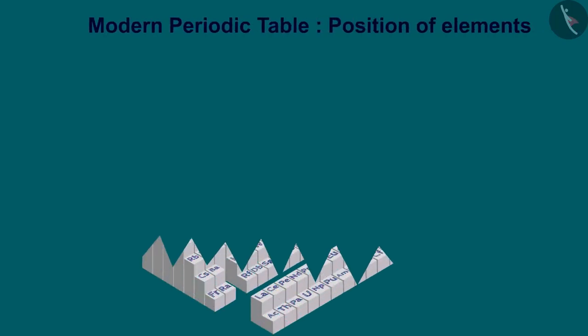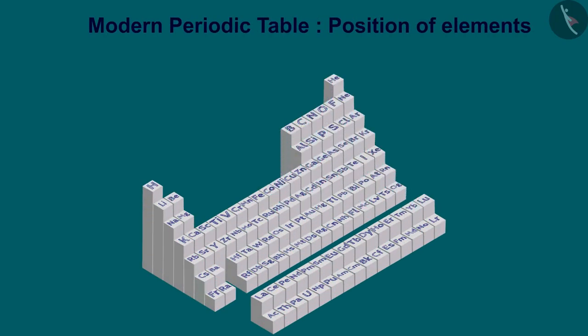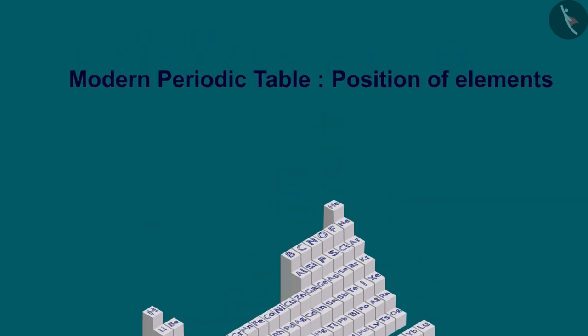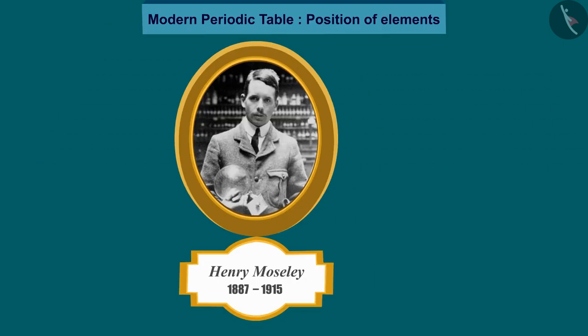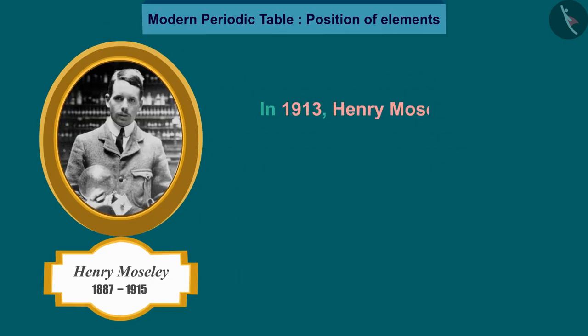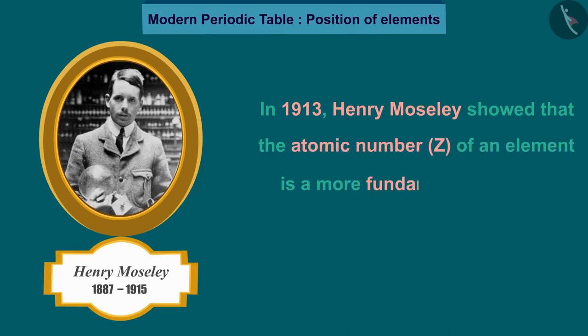Hello friends, welcome to this video session. The topic that we are going to cover in this session is modern periodic table. In 1913, Henry Moseley showed that the atomic number, symbolized as Z of an element, is a more fundamental property than its atomic mass.